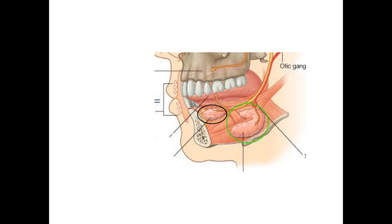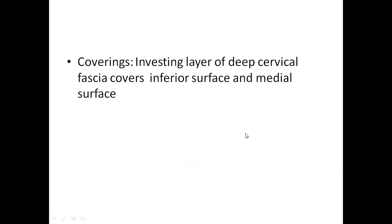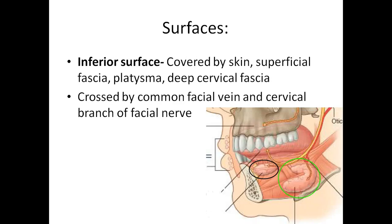The deep lamina of the investing fascia is attached to the mylohyoid line of the mandible, while the superficial lamina is attached to the inferior border of the mandible. Together, they cover the inferior surface and the medial surface of the gland.